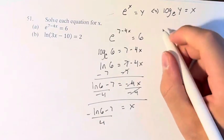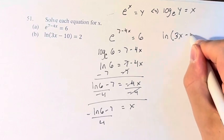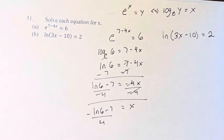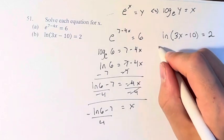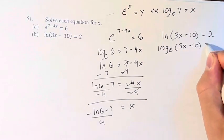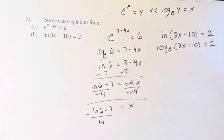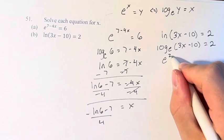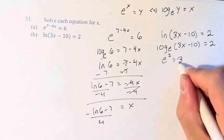In b, we have the natural log of 3x minus 10 is equal to 2. The natural log is log base e of 3x minus 10 is equal to 2. Therefore, doing this, we have e to the x, e squared, equals y, 3x minus 10.